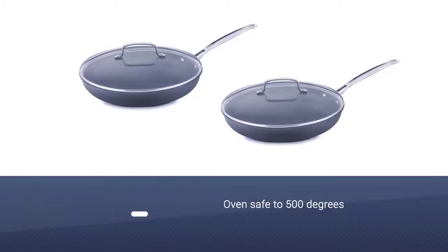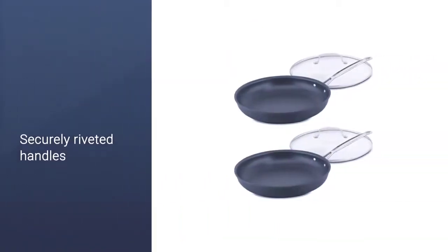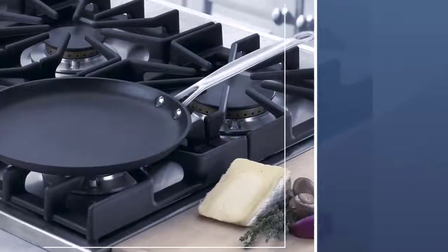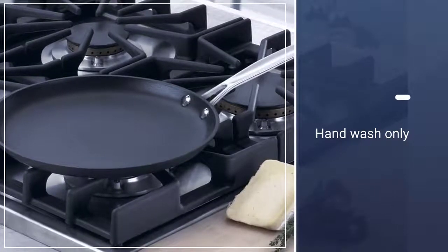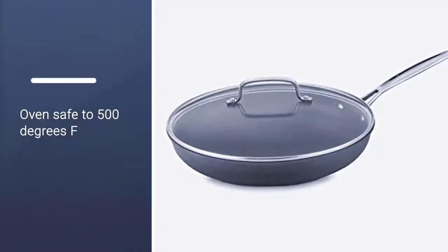The glass cover is useful for steaming foods while the drip-free rim makes it easy to pour liquids from the pan without creating a mess. The handles are designed to stay cool during cooking and are riveted on for security. The pan is oven safe to 500 degrees and is approved to use with metal utensils.